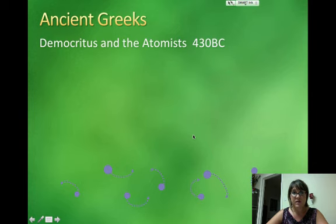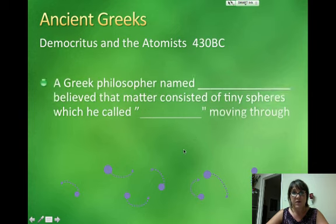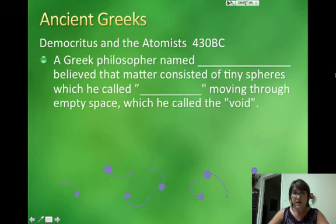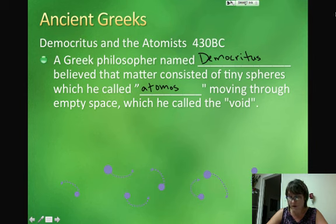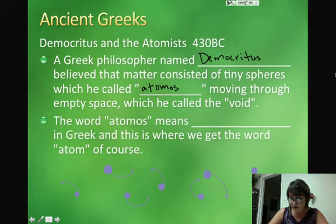The ancient Greeks came up with some ideas in around 430 B.C. A Greek philosopher named Democritus believed that matter consisted of tiny spheres that were indivisible, so he called them atomos. And he said they were moving through empty space, which he called the void. So then you can see where we get our idea of atoms. Atomos means indivisible.